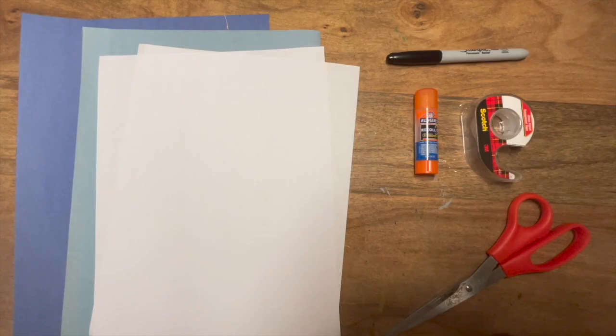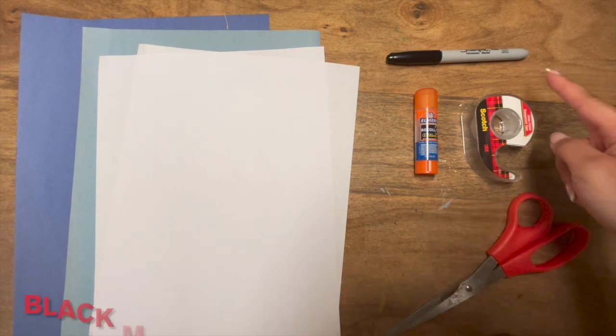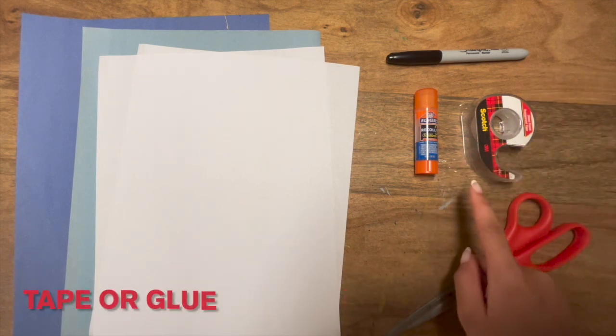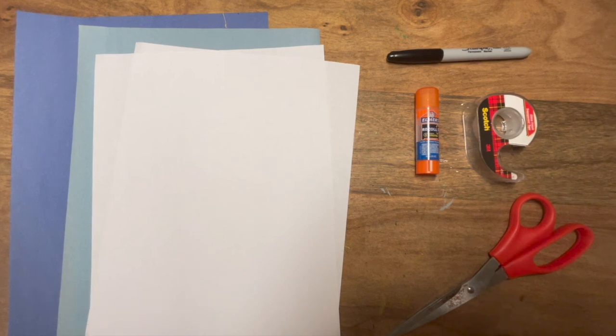For today's activity, you'll need two pieces of blue paper, two pieces of blank paper, a black marker, tape or glue, and some scissors. Now that we know what we'll need for our craft today, let's go ahead and get our activity started.